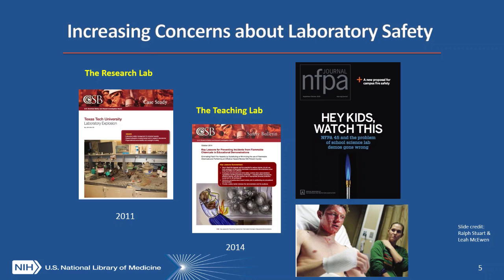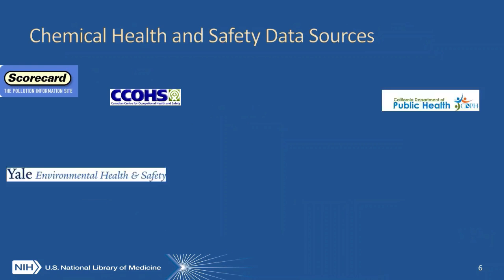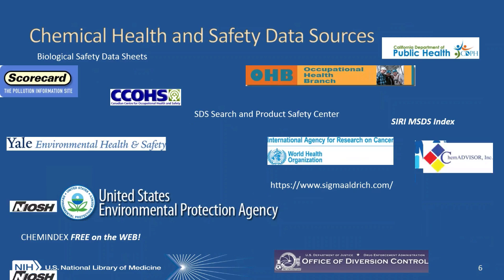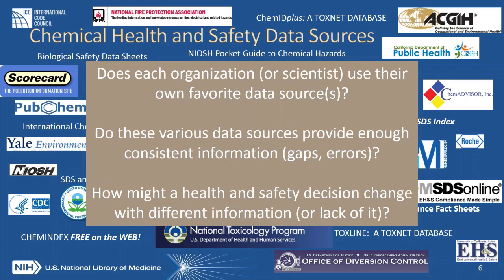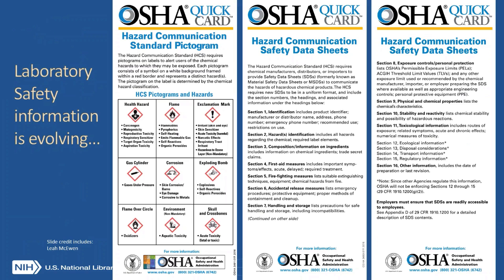This has been specifically addressed in reports by the ACS and National Research Council. Chemical health and safety data sources are blessed in many ways by having so many different data sources available. However, this presents an issue in that there can be gaps or errors in information. Every scientist may not be aware of the various sources of information. Coupled with this, laboratory chemical safety information is evolving. There has been a recent transition from material safety data sheets — the so-called MSDS — to the global harmonization system GHS safety data sheets, otherwise known as SDS.